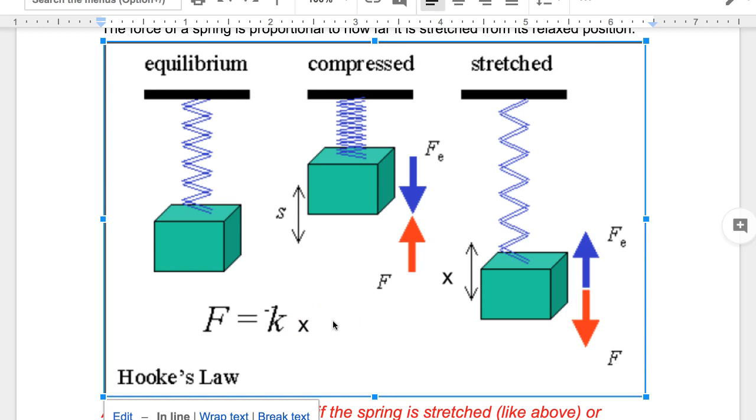X is the distance it moved. K describes the type of spring, like how soft or how hard the spring is.